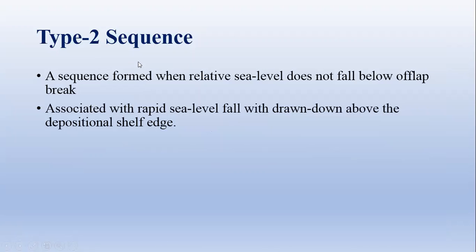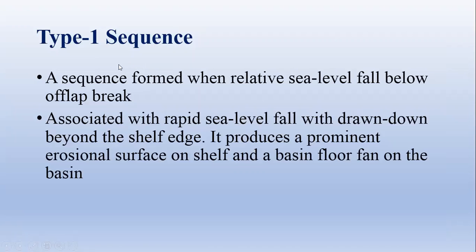A type 1 sequence forms when the relative sea level falls below the shelf break. It is associated with a rapid sea level fall, with withdrawal behind the shelf edge. It produces a prominent erosional surface on the shelf and basin floor fan.